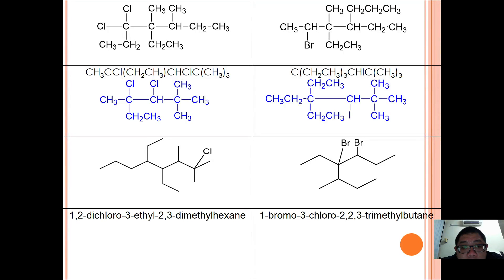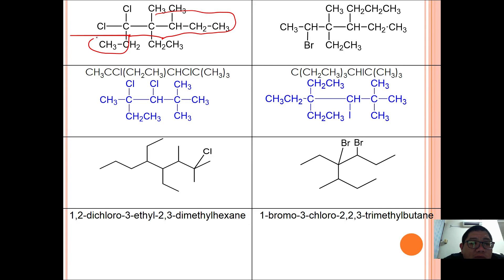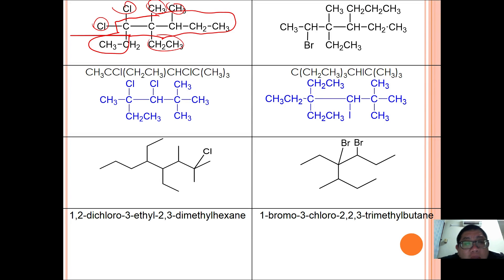Let us go through some examples. Here the longest parent chain is 1–2–3–4–5–6–7 carbons, so it is a heptane. The substituents are methyl, methyl, ethyl, chloro, and chloro. Reading from the correct end, the full name is 3,3-dichloro-4-ethyl-4,5-dimethylheptane.